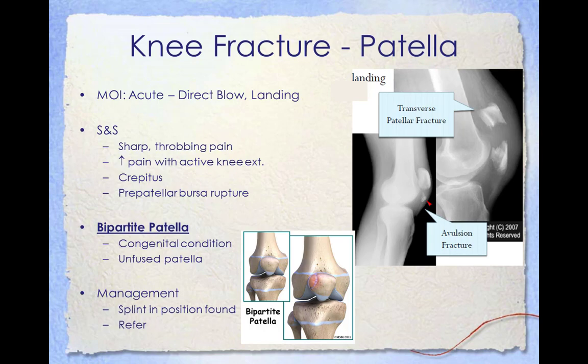Bipartite patella is a congenital condition in which the patella is made of two bones instead of one. Normally the two bones fuse together as the child grows, but in bipartite patella they remain separate. Individuals with this condition are often confused as having a fractured patella, but X-rays can help distinguish between the two.